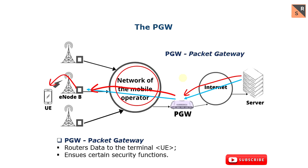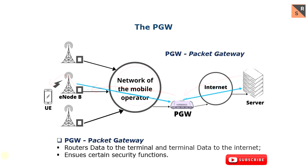And from the base station to my terminal over the radio channel. The function of the PGW is to route data to the terminal and also take care of a certain number of security functions. It is a gateway and it must be protected against attacks from outside.